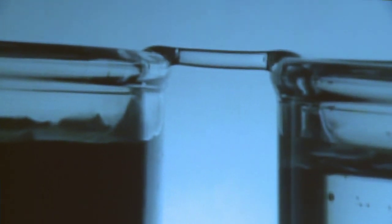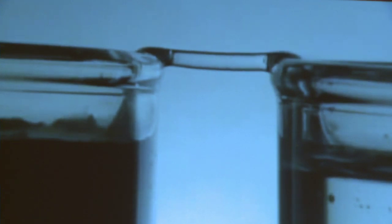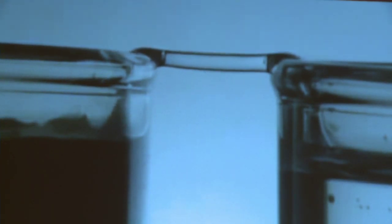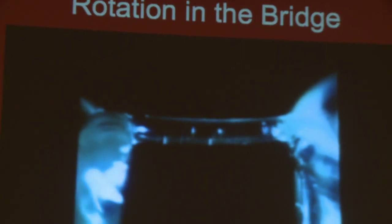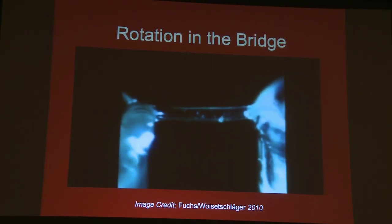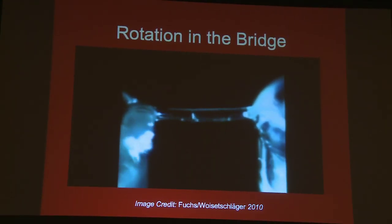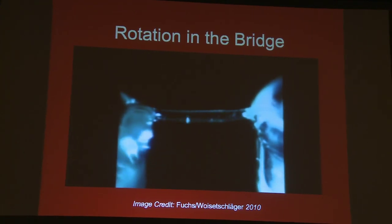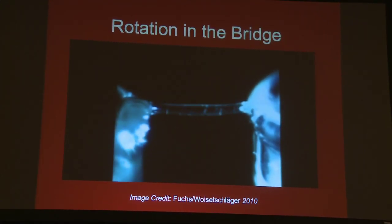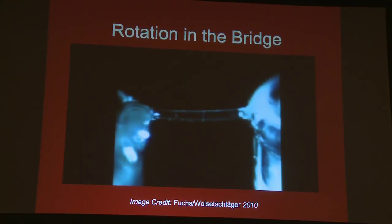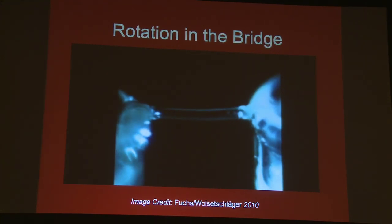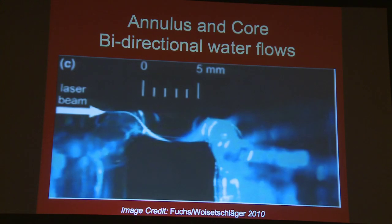The bridge is like a tightrope — it doesn't sag as you'd expect under its own weight, even when stretched to 25 millimeters. This film, also by Elmar Fuchs, shows that the water is rotating. The film is in slow motion because the rotation is actually too fast to see with the naked eye. Fuchs has shown that water in the bridge is separated into an annulus and an inner core, and the circular annulus is the part that's rotating. In laser light shone in from the end of the bridge, you can see the light curving around the rotating annulus and avoiding the core in the middle.